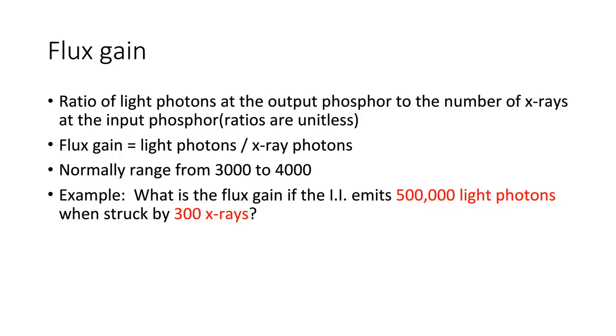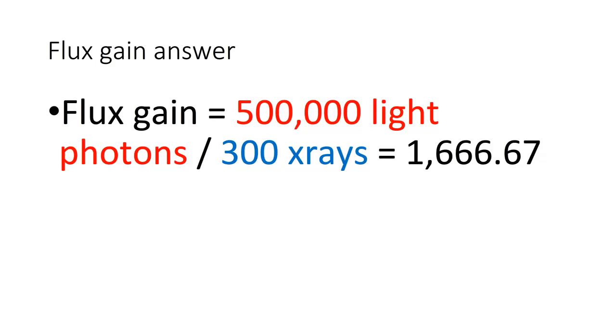Pause here and let's take a few minutes and do the example. Like I said in the previous slide, you're going to divide your 500,000 light photons over 300 x-rays. Our answer should be 1,666.67.